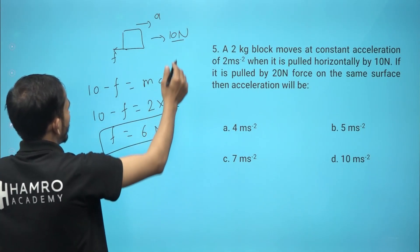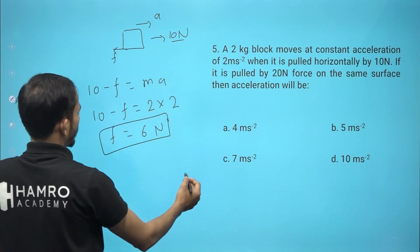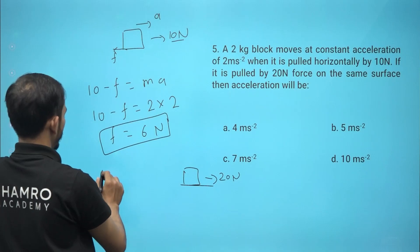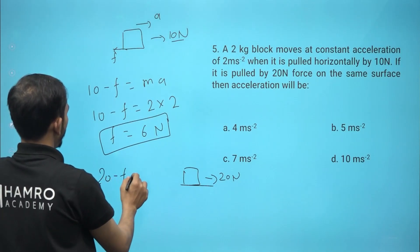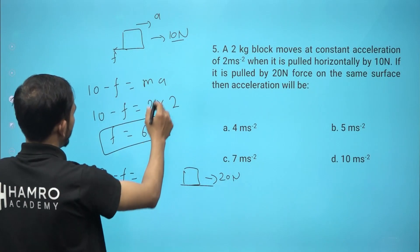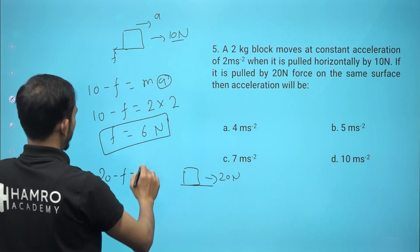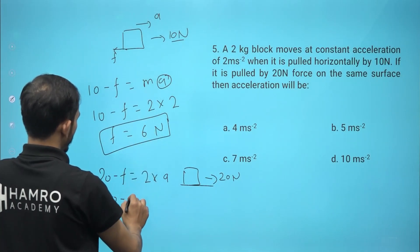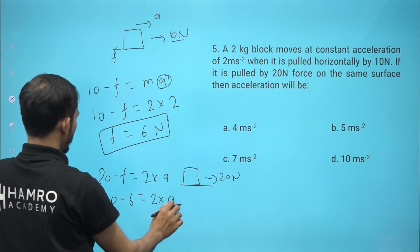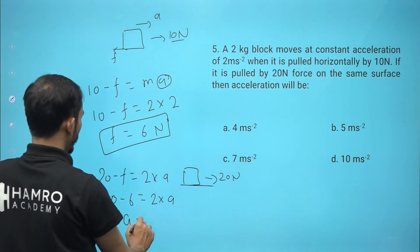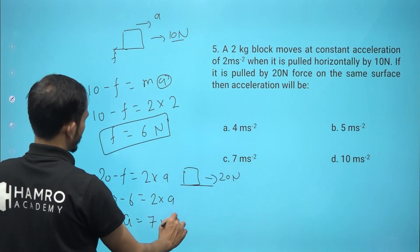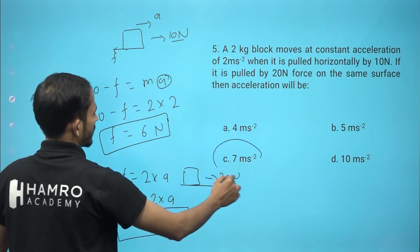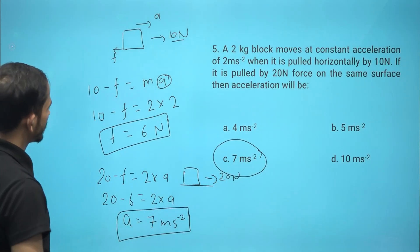In the next case, the same block is pulled by 20 newton on the same surface, so frictional force remains 6 newton. Applying Newton's second law: 20 minus 6 equals 2 times a, giving 14 equals 2a, so acceleration a equals 7 meters per second squared. The answer is option C.